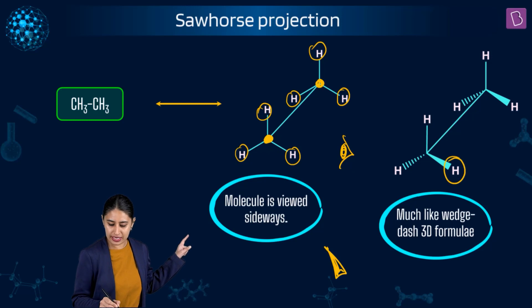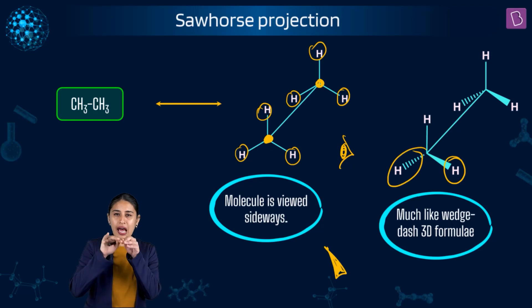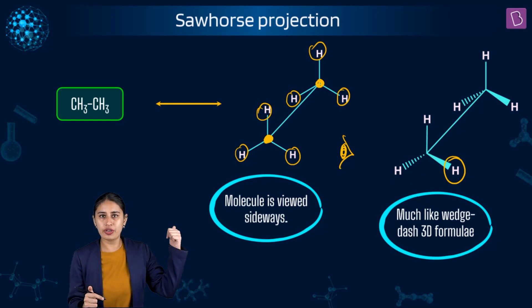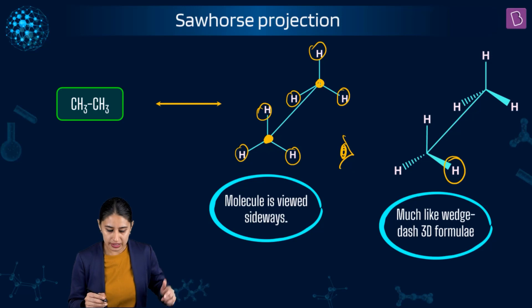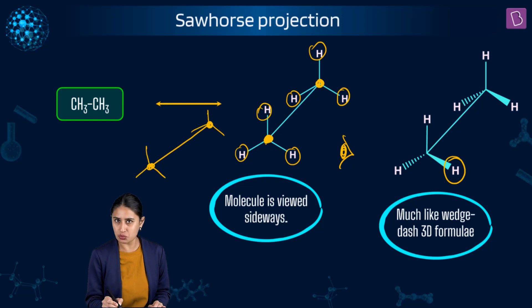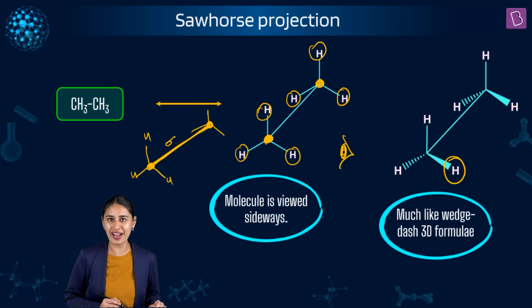We can also write it like this — the wedge lines out here mean out of the plane, and the dash is inside the plane. In the sawhorse projection, we write it using slant lines. The tetravalency of carbon is complete. These two lines represent where we are writing the hydrogens, and this is a carbon-carbon sigma bond.